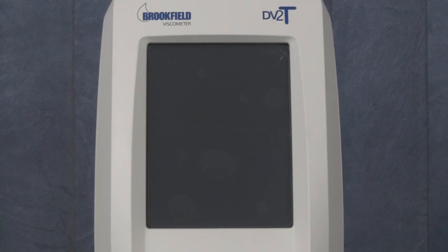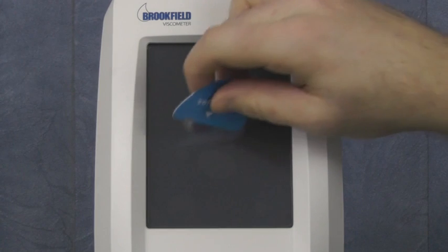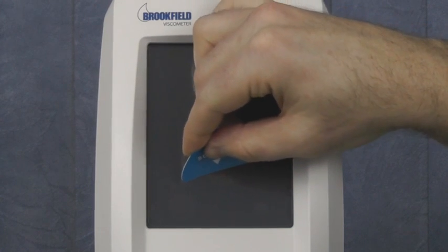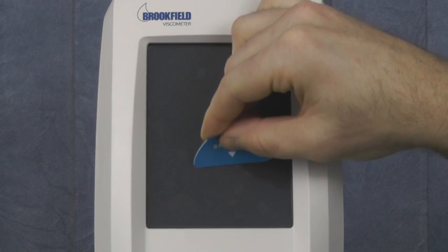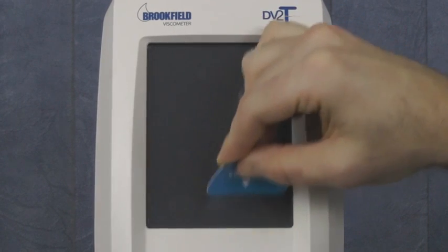Once the screen protector is applied, you will most likely see air bubbles trapped between the protector and the screen. Use the provided soft card to push trapped air bubbles from the center of the screen to the edge. Small bubbles should go away within 48 hours.